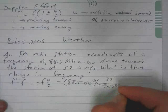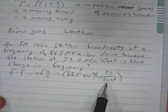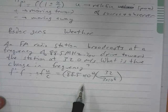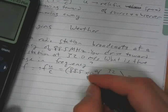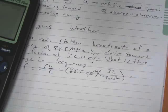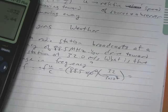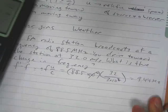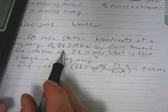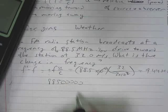You could already probably figure out just by looking at this, this is not going to be a huge change in frequency. If we punch those numbers into the calculator, this becomes 10 squared in the denominator. So we've got 88.5 times 32 divided by 300. And so we get the change in frequency is 9.44 hertz, which might seem substantial except that 88.5 megahertz is 88,500,000.